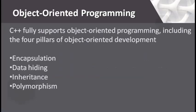C++ fully supports object-oriented programming, including the four pillars of object-oriented development: encapsulation, data hiding, inheritance, and polymorphism.